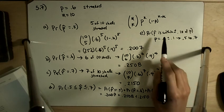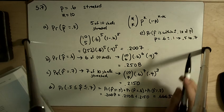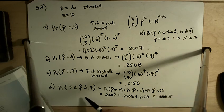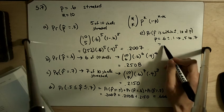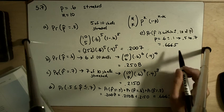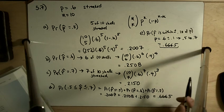And so the probability that P hat is between 0.5 and 0.7 is exactly what we calculated in part D. And so the answer to that is going to be 0.6665, the exact same answer as part D.